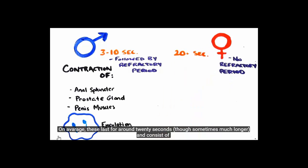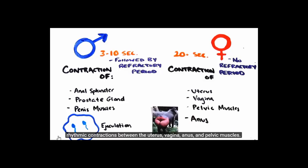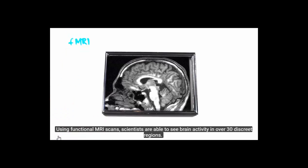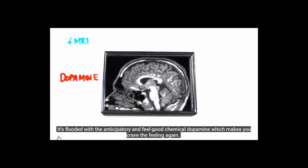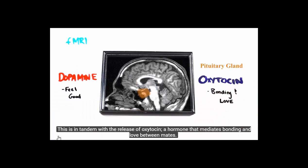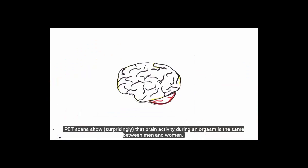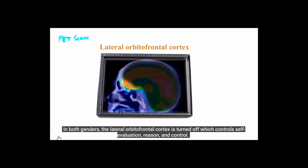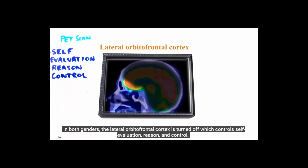Women's orgasms consist of rhythmic contractions between the uterus, vagina, anus, and pelvic muscles. But it's the brain that takes control — or rather loses control — during orgasm. Using functional MRI scans, scientists can see brain activity in over 30 discrete regions. The brain is flooded with the anticipatory feel-good chemical dopamine, which makes you crave the feeling again. This is in tandem with the release of oxytocin, a hormone that mediates bonding and love between mates. PET scans show, surprisingly, that brain activity during orgasm is the same between men and women.